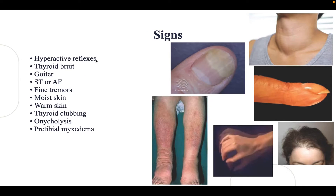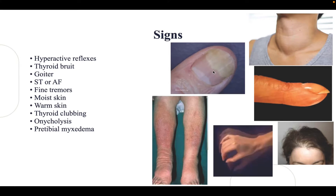For the signs, we have hyperactive reflexes, thyroid bruit, goiter (enlargement of the thyroid gland), sinus tachycardia or atrial fibrillation, fine tremors, moist and warm skin, thyroid clubbing, onycholysis, peritibial myxedema, and thinning of the hair.